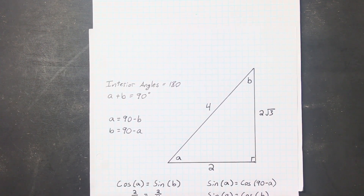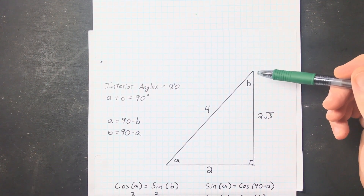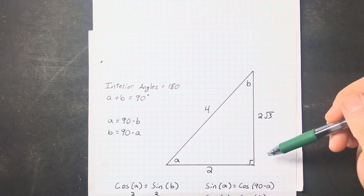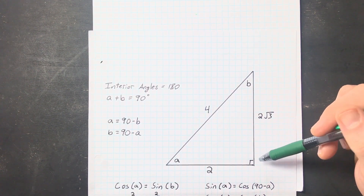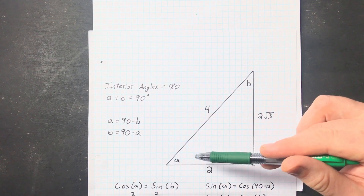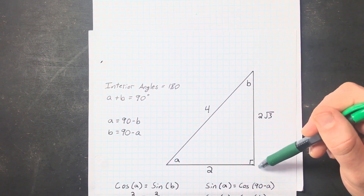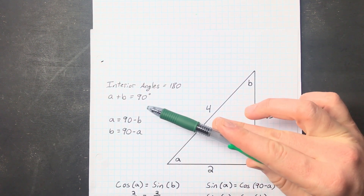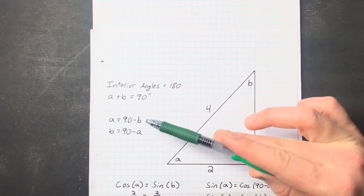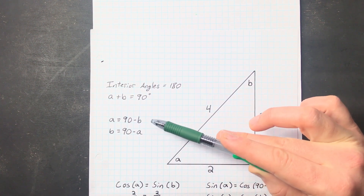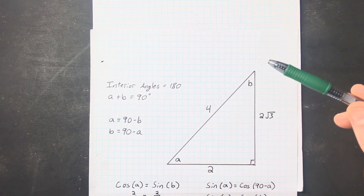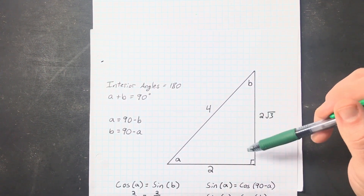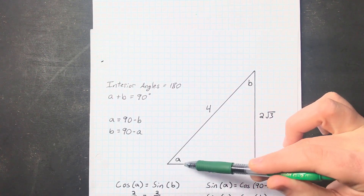The first thing we need to think about is the relationship between the two angles in a triangle that aren't the right angle. All three angles of a triangle add up to 180 degrees, and this right angle here is 90, so that means what's left for these two angles is 90 as well. So a plus b equals 90, and therefore a equals 90 minus b.